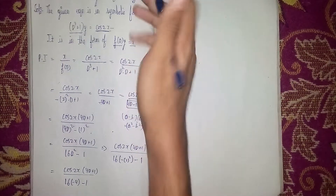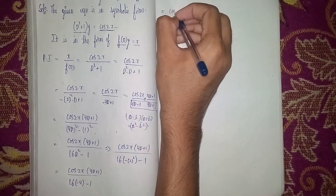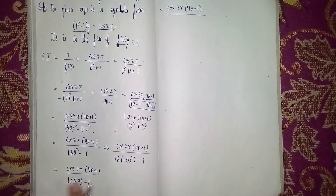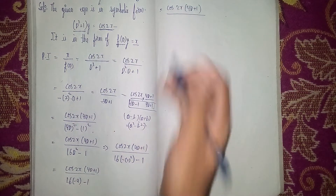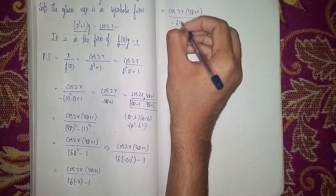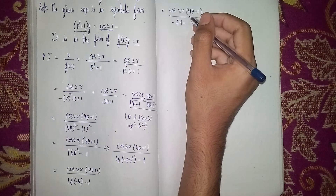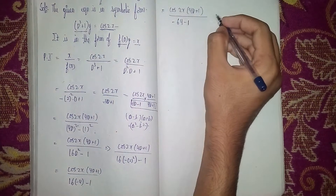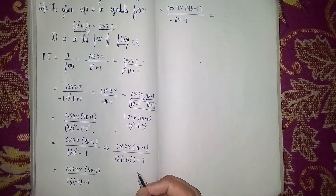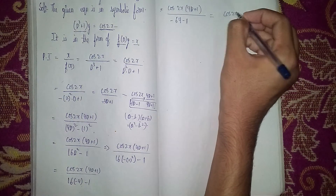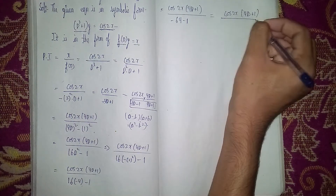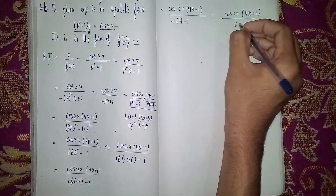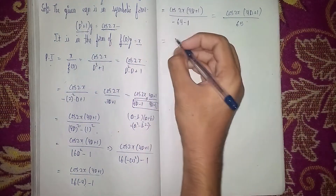So it becomes cos(2x) × (4D + 1) divided by (16 × 4 = 64 ... wait, 16 into −4 is −64, then minus into minus becomes plus). So the denominator becomes −64 × (−1), and minus times minus becomes plus, giving us 65. The expression is cos(2x) × (4D + 1) / 65.